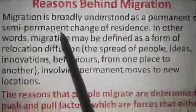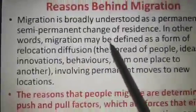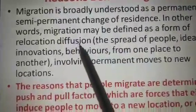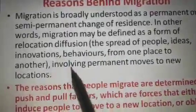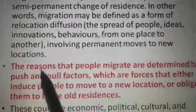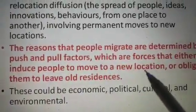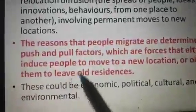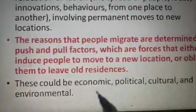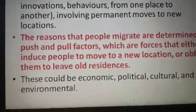Migration is broadly understood as a permanent or semi-permanent change of residence. In other words, migration may be defined as a form of relocation diffusion — that is, the spread of people, ideas, innovations, and behaviors from one place to another — involving a permanent move to new locations. The reasons that people migrate are determined by push and pull factors, which are forces that either induce people to move to a new location or oblige them to leave old residences. These could be economic, political, cultural, or environmental.